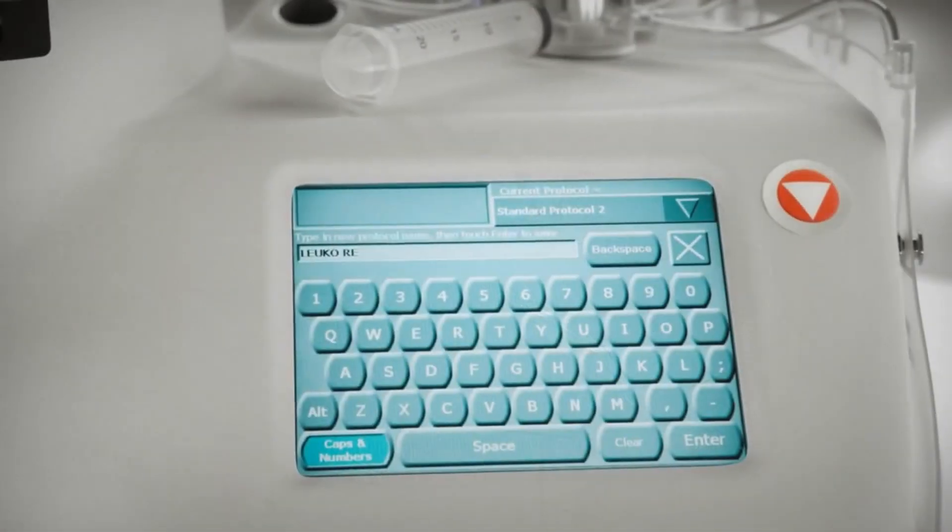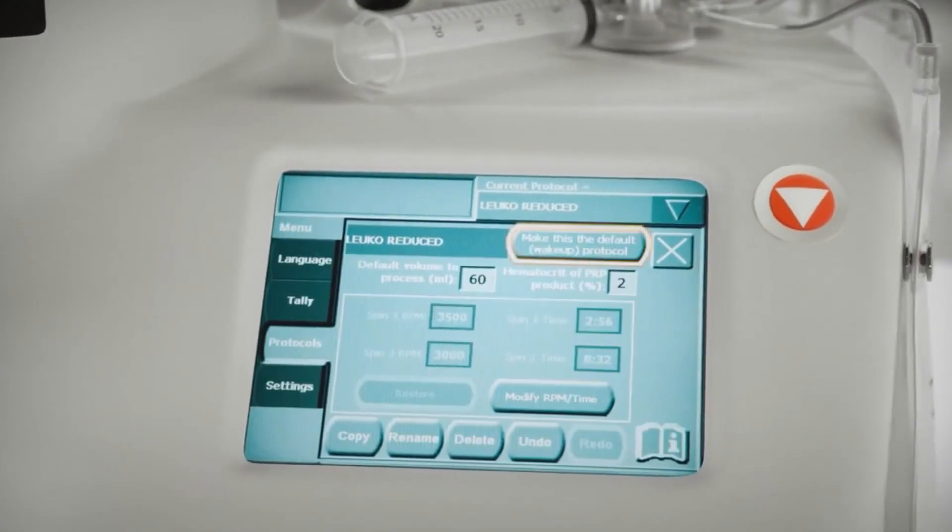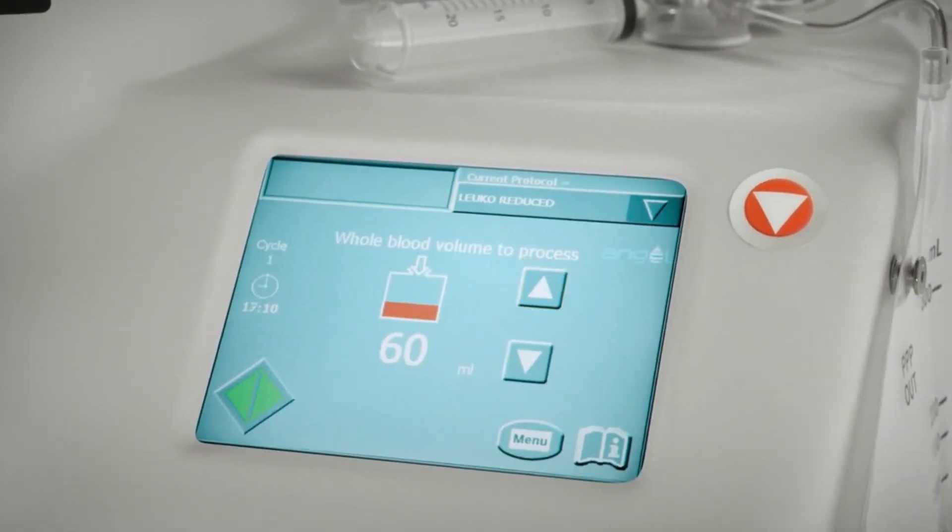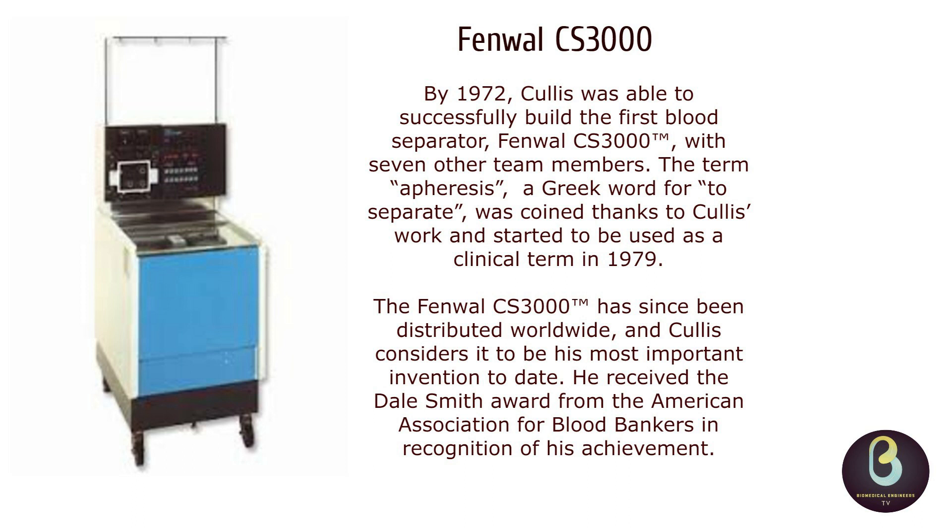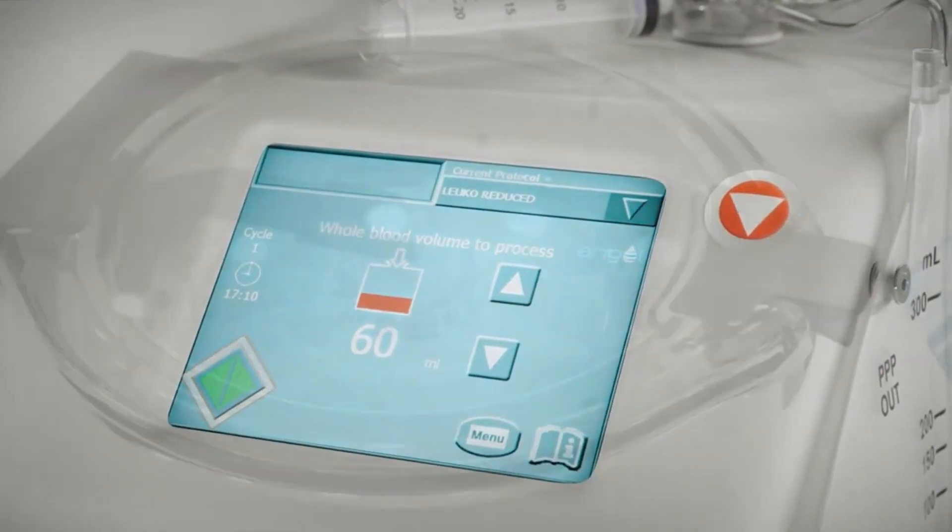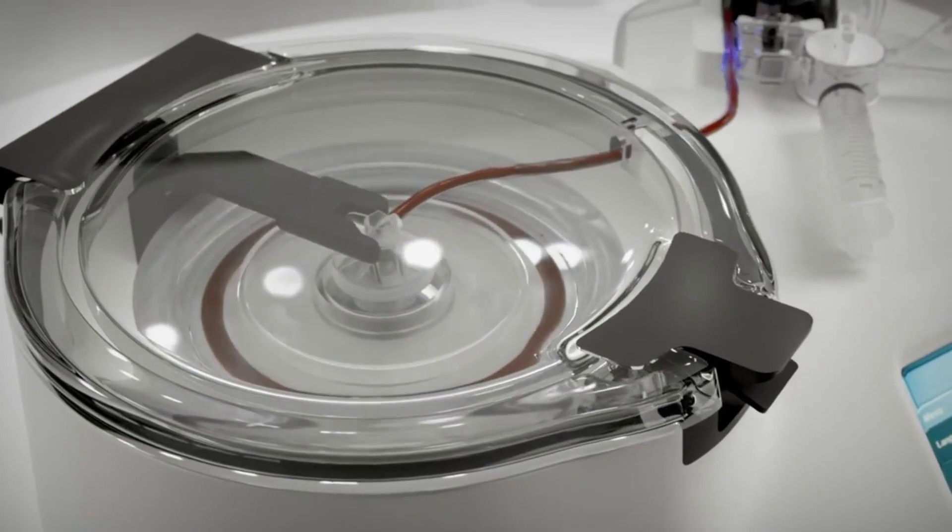By 1972, Cullis was able to successfully build the first blood separator, Fenwal CS3000, with seven other team members. The term apheresis, a Greek word for 'to separate,' was coined thanks to Cullis' work and started to be used as a clinical term in 1979.